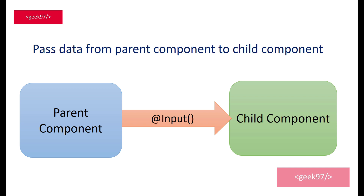We just saw how to use the input decorator to pass data from parent component to child component. If you want to intercept that data in the child component before using it, you can use setter and getter. If data keeps changing in the parent component — for example, if data is of type observable — the child component has a lifecycle hook ngOnChanges, which Angular invokes whenever the value of the input decorator changes. We will cover that topic in a further video.